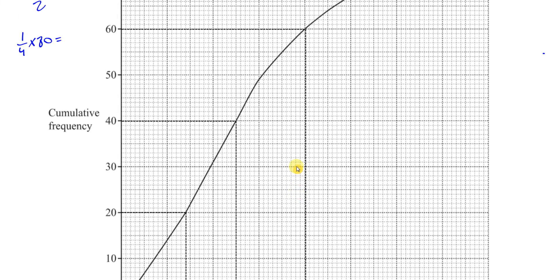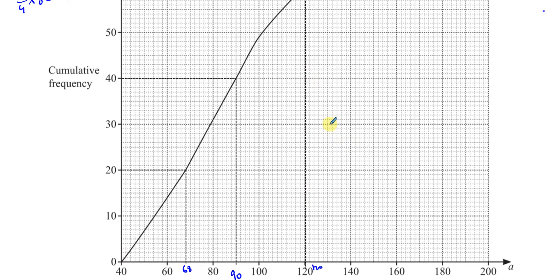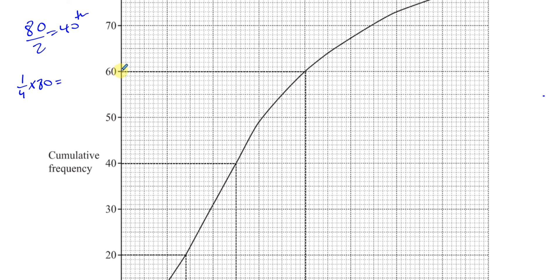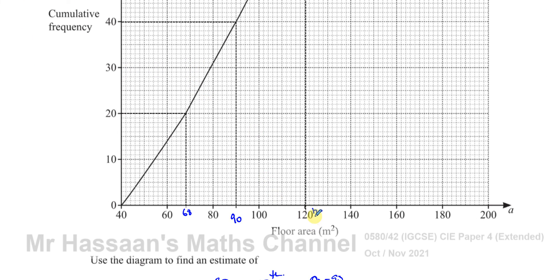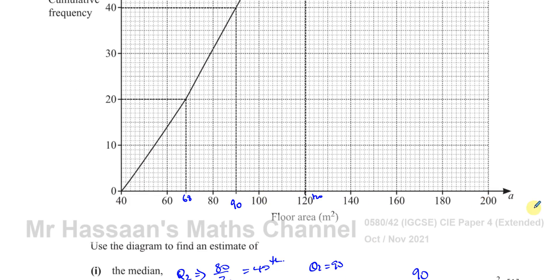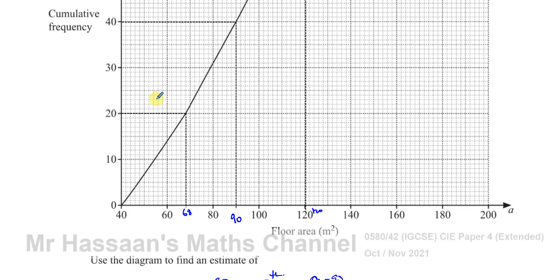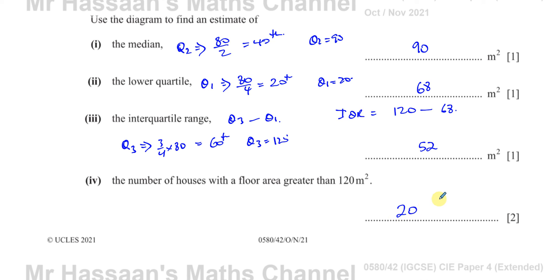Part four says the number of houses with a floor area greater than 120 meters squared. Now we've got to go to 120 meters squared, which is what we just found. The 60th house in order of size is going to have an area of 120 meters squared. So the number of houses which have a floor area greater than 120 are going to be the ones that are more than 60. So it's the ones on the higher end. So it's going to be basically all of these ones here. 60 is the ones that have that area or less. We want to find the number that have that area and more, which is the last 20 houses. So the number here we write down is 20.